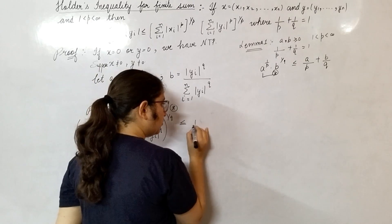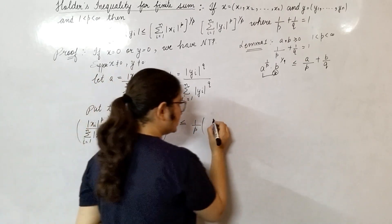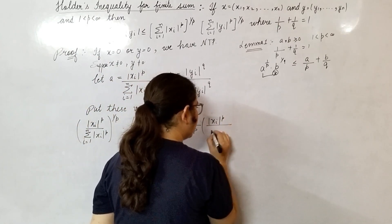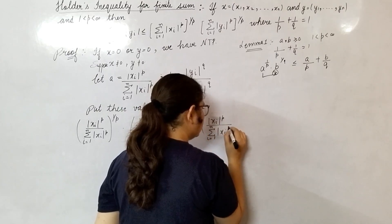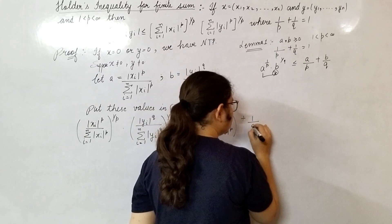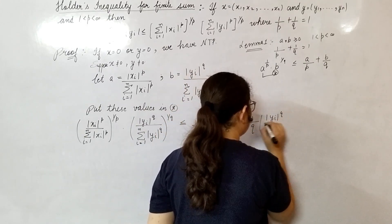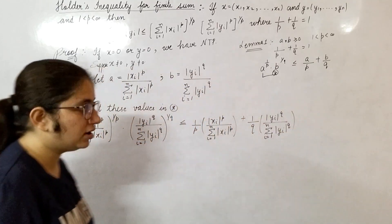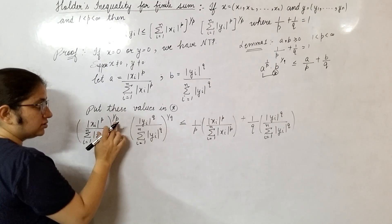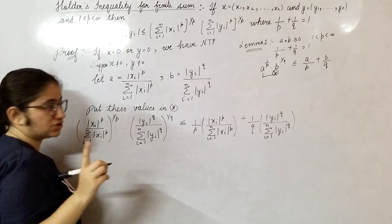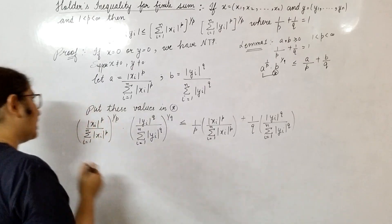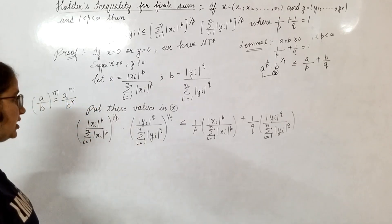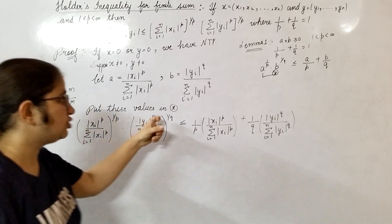This is less than or equal to 1/p times the value of a, which is |x_i|^p divided by summation from i equals 1 to n of |x_i|^p, plus 1/q times the value of b, which is |y_i|^q divided by summation from i equals 1 to n of |y_i|^q. Now we will firstly take summation, and in the next step we will cancel. Note that if you have (a/b)^m, you can write this as a^m / b^m. We can use this property here to cancel terms.